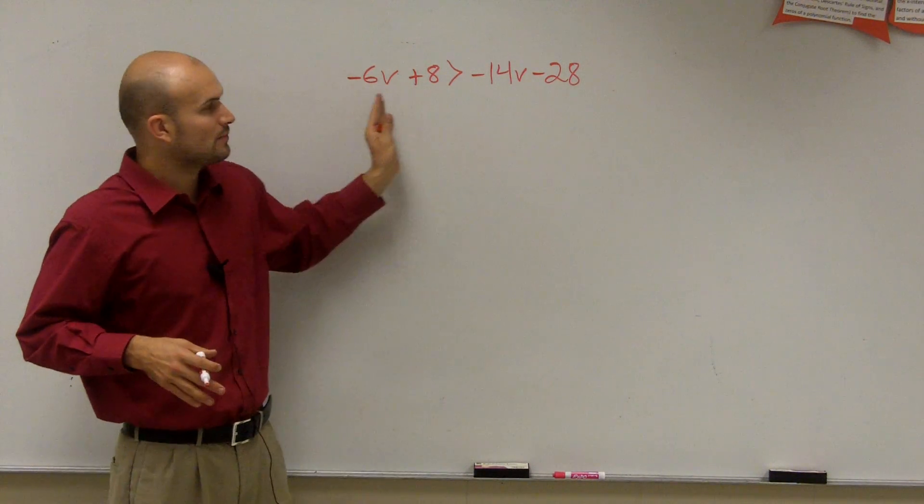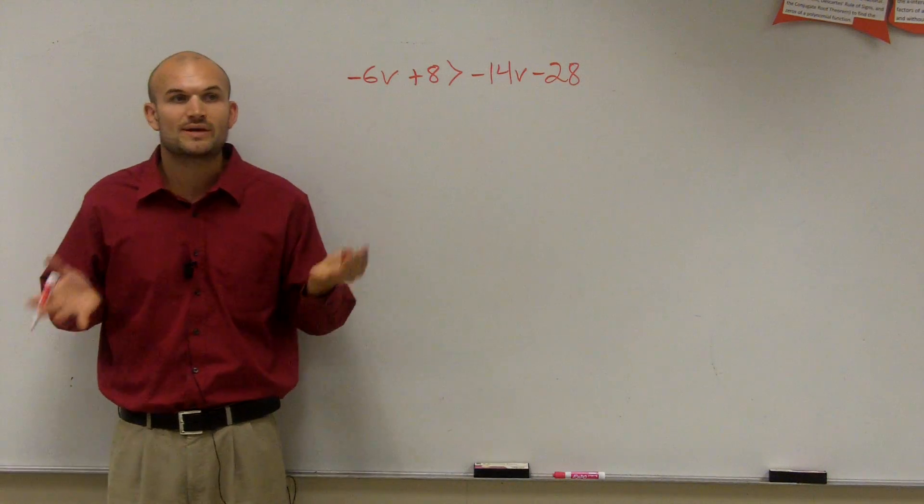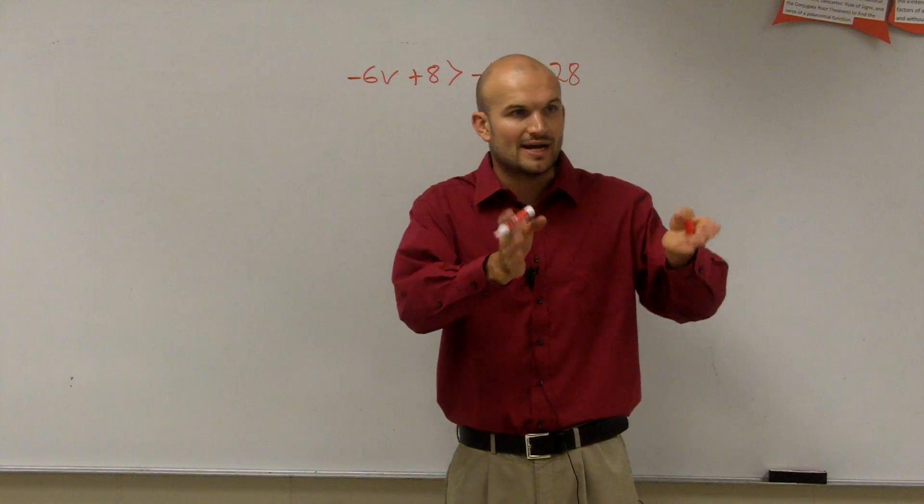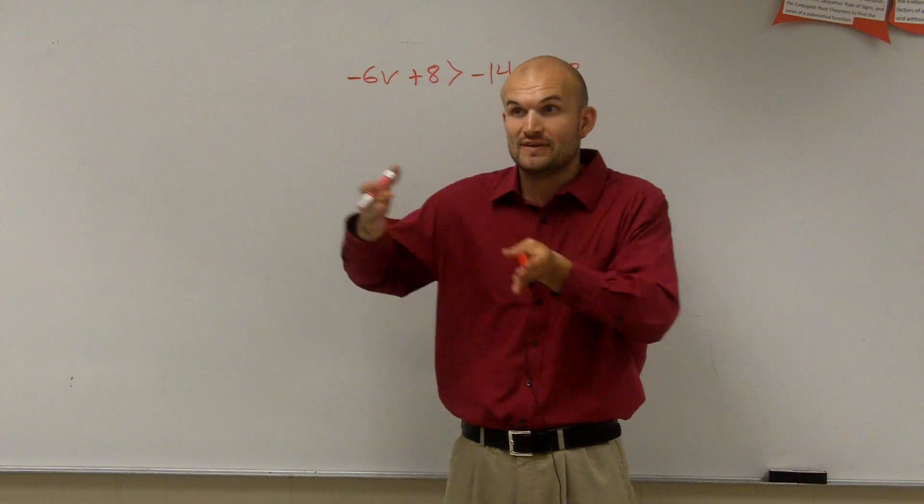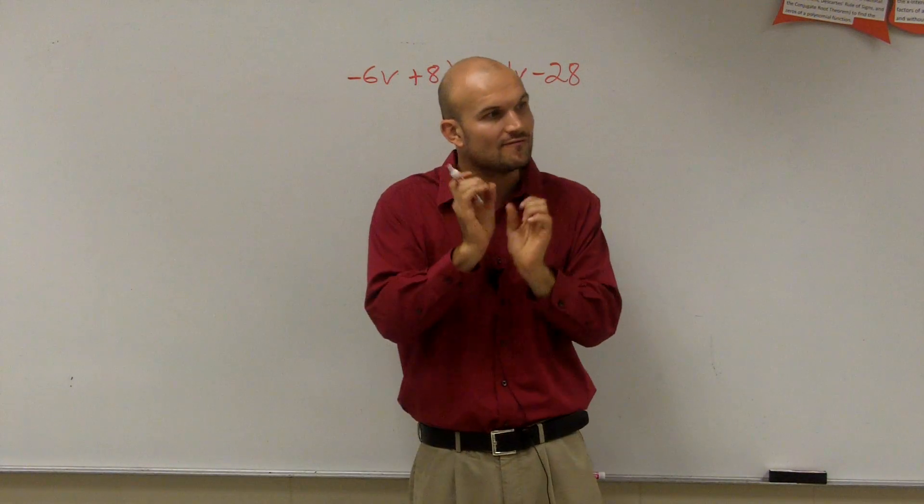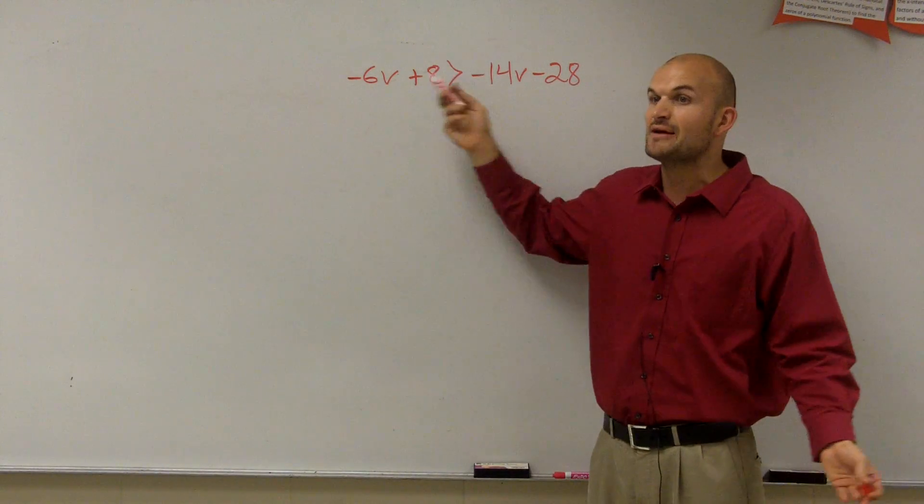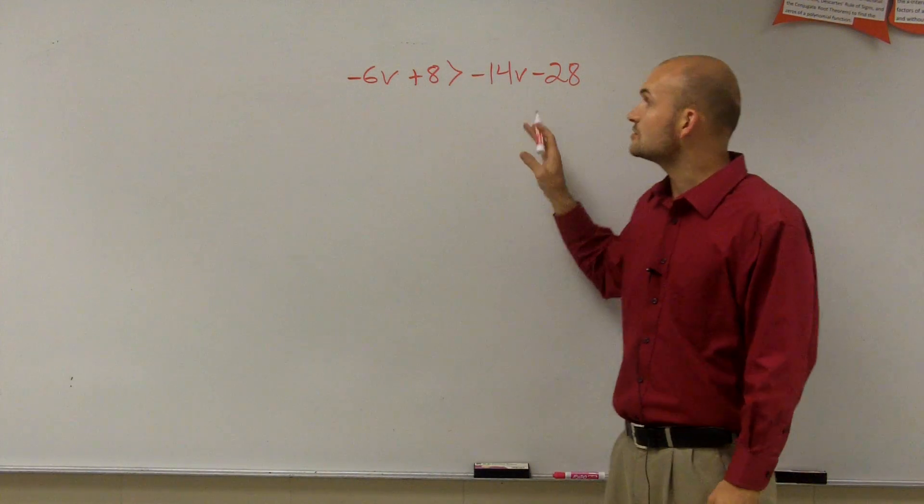So the first thing we want to do is when we notice we have a variable on both sides, we have to get the variable on the same side. Right? When you solve an equation, you've got to have v equals, right? Or v is less than, v is greater than. But you've got to get a variable by itself. So if I look here, I have the v on both sides. I need to get my v's to one side or the other.